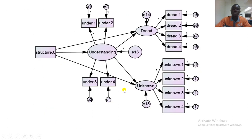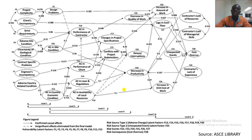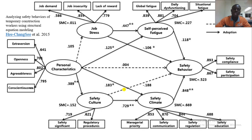Then you can move into something like this — understanding the unknowns and redress — these are simple ones. These are complex, and we have another complex one like this. This one was to analyze safety behaviors of temporary construction workers by Shin Itar (2015), and they look at job stress, perceived fatigue, personal characteristics, safety behavior, and other things.